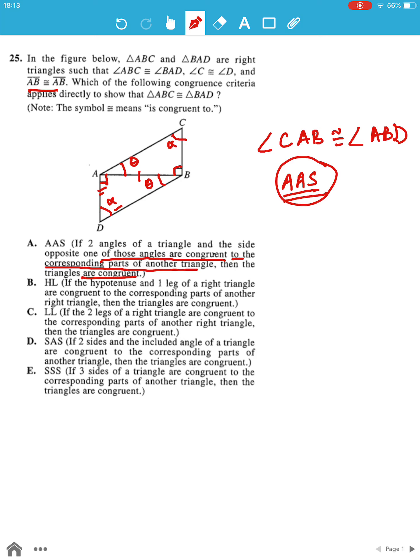Also, opposite to alpha we have given AB, which is a criteria in option A. So option A is the correct answer.